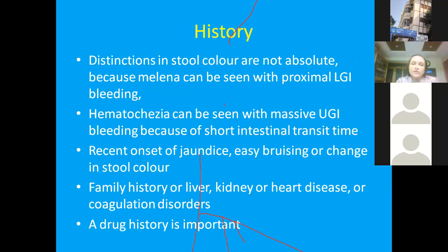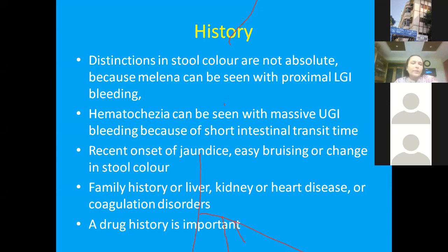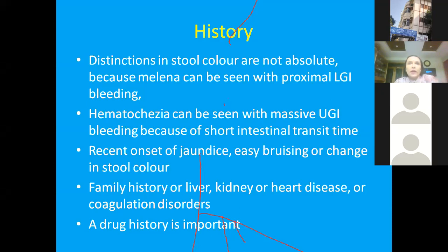After securing the ABC and beginning resuscitation, a good history is essential. Stool and vomit color are not absolute indicators — melena can be seen with proximal lower GI bleeding, and hematochezia can occur with massive upper GI bleeding. Recent jaundice, change in stool color, and family history of liver, kidney, or heart disease or coagulation disorders are important. Drug history must never be forgotten, as NSAIDs and unknown drugs can cause significant bleeding.